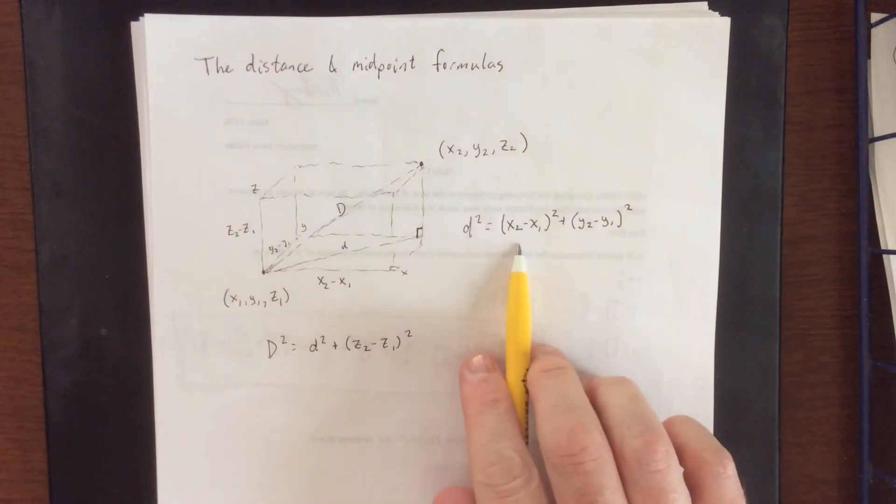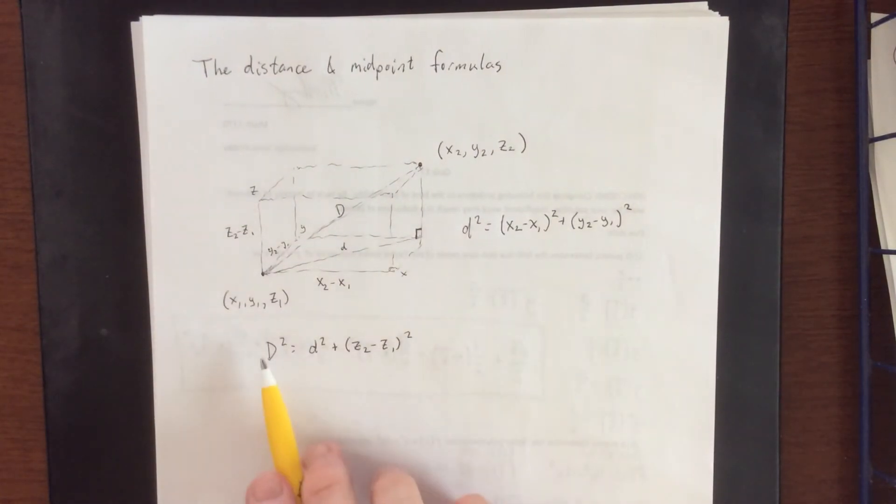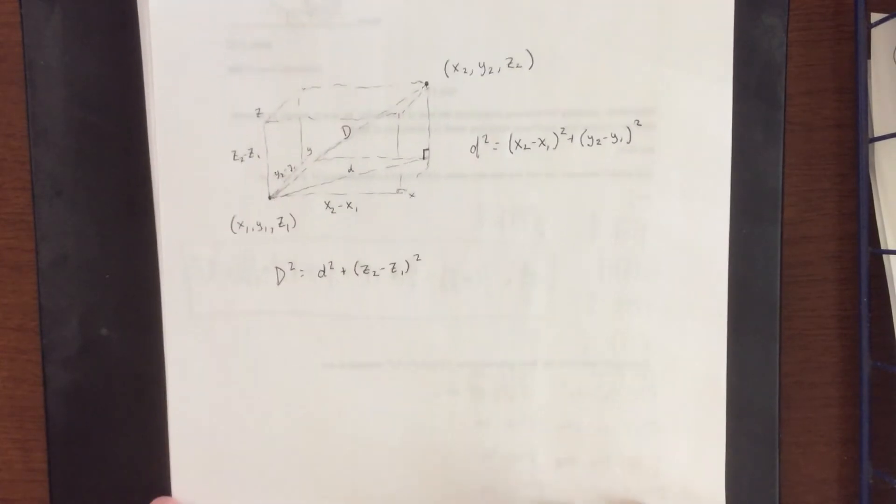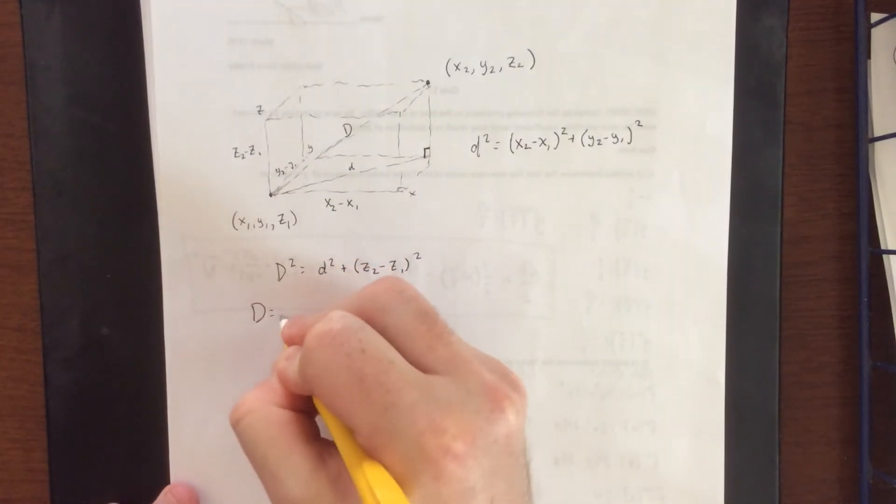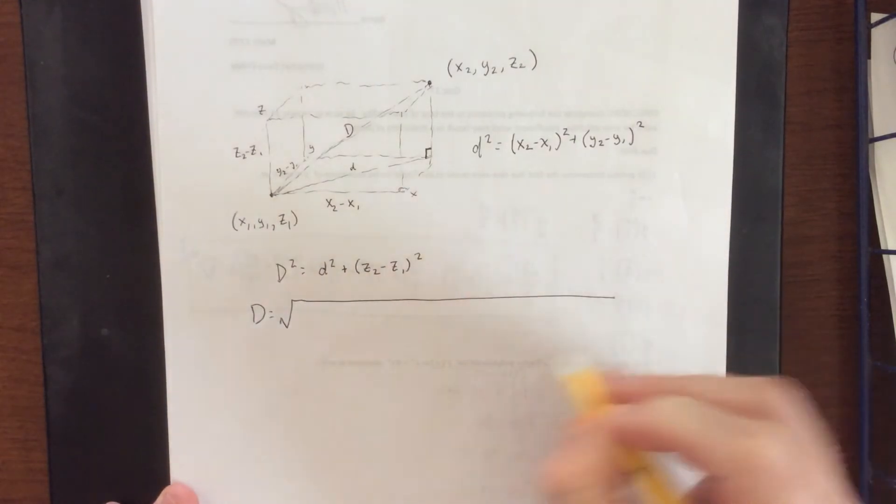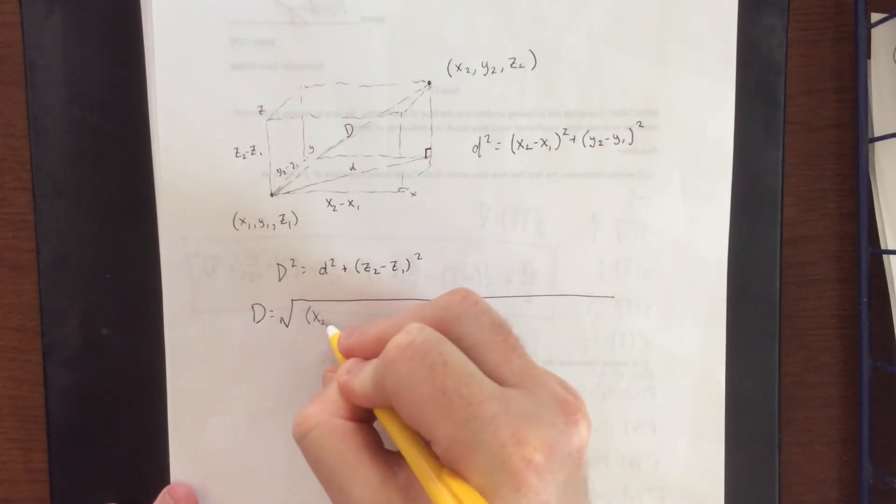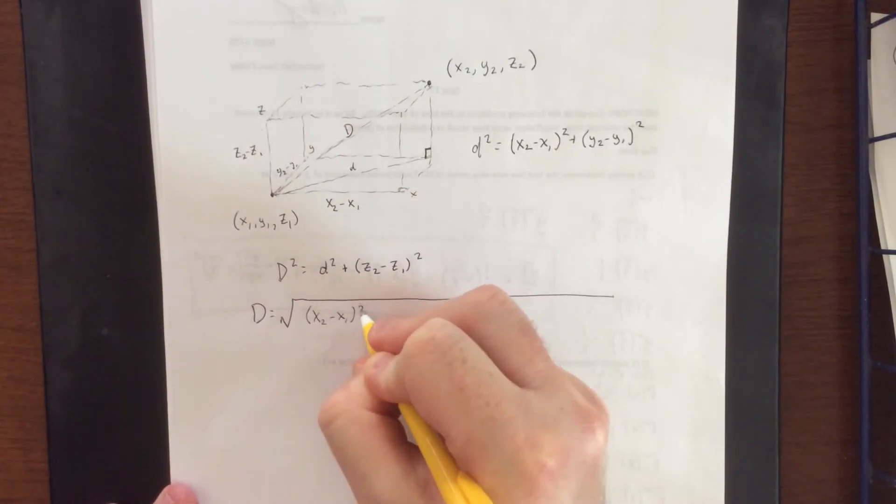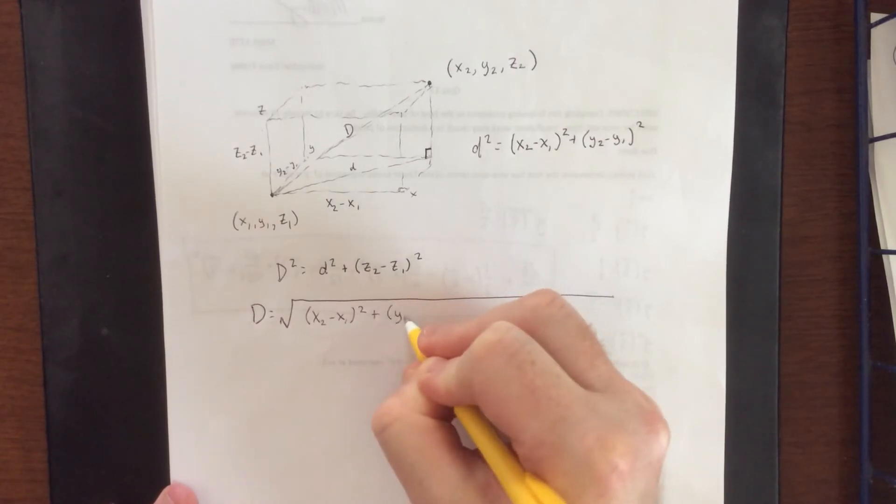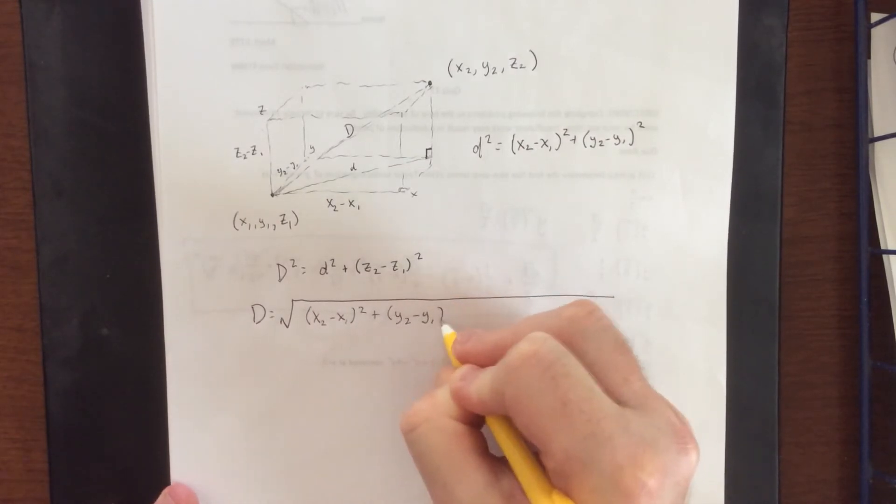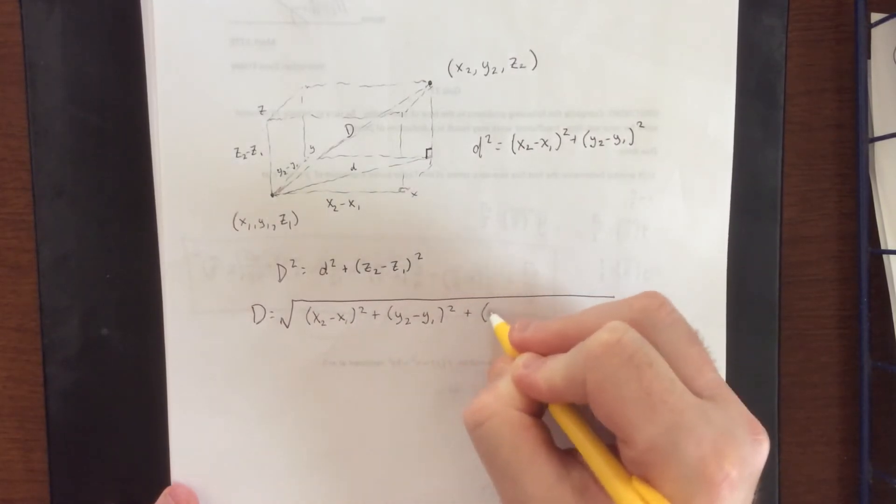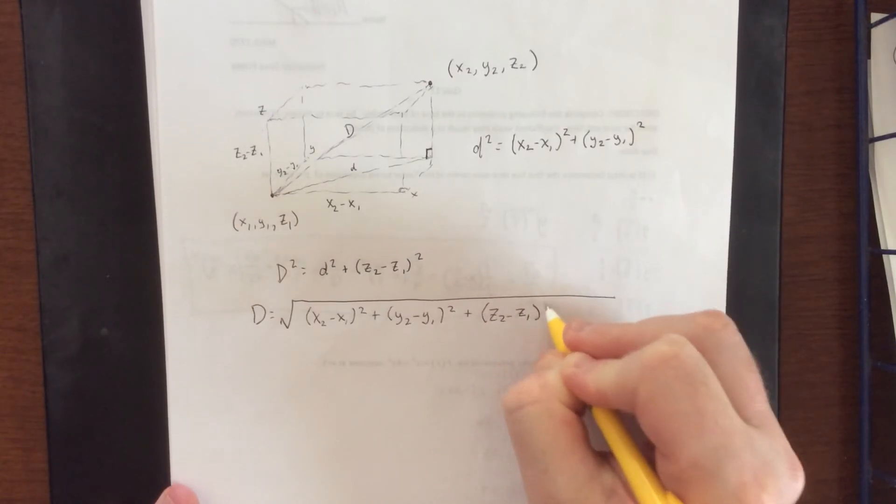If we make this substitution on the d² and take a square root to solve for D, we get the following: distance equals the square root of (x₂ - x₁)² plus (y₂ - y₁)² plus (z₂ - z₁)².